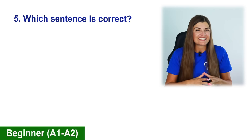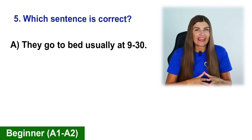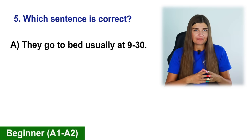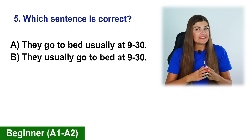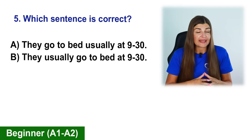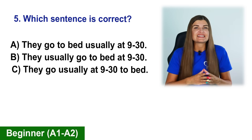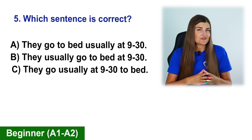Which sentence is correct? A. They go to bed usually at 9.30. B. They usually go to bed at 9.30. C. They go usually at 9.30 to bed.